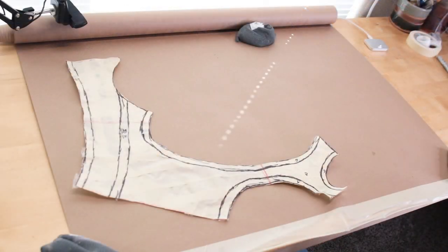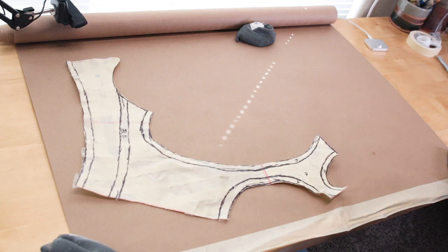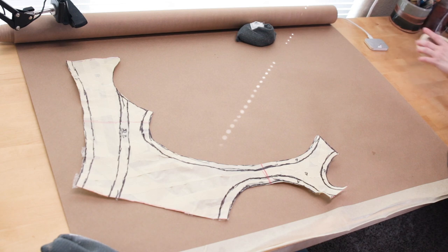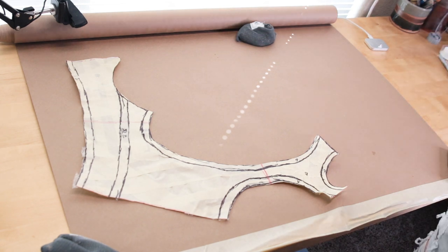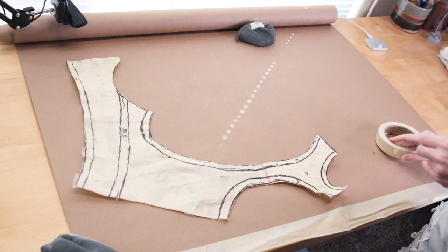This is what we're going to be transferring all of our saran wrap masking tape patterns onto so that way we get a really accurate pattern and we can finalize any of the lines. To start off, I put the largest piece of the breastplate onto the butcher paper and taped it.